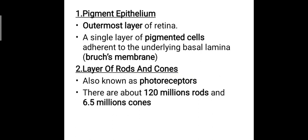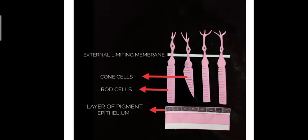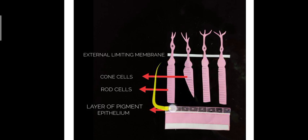The second layer is the layer of rods and cones, also known as the photoreceptor layer. Rods help in dim light vision and cones in photopic vision. There are about 120 million rods and 6.5 million cones in our eye. In the diagram you can see the pigment layer followed by the layer of rods and cones, then the external limiting membrane.